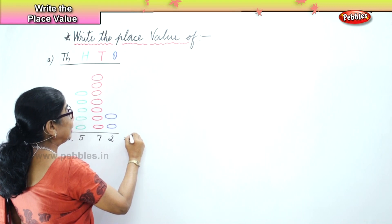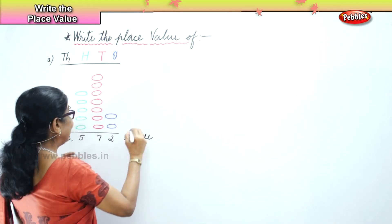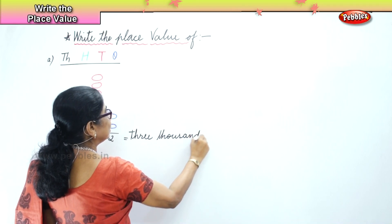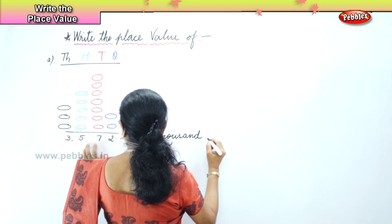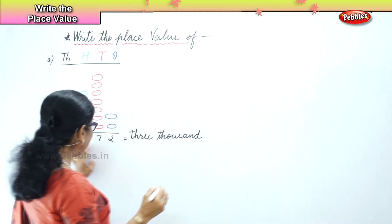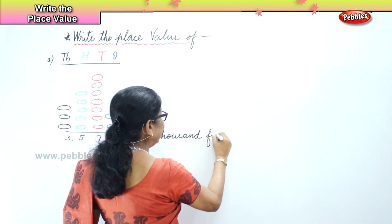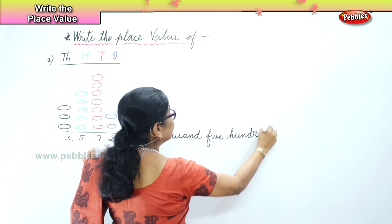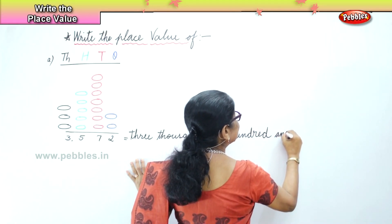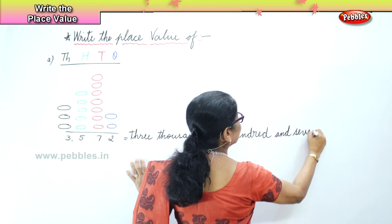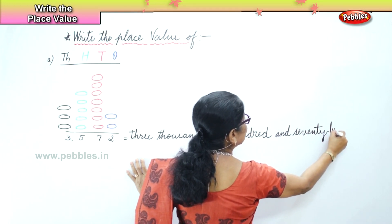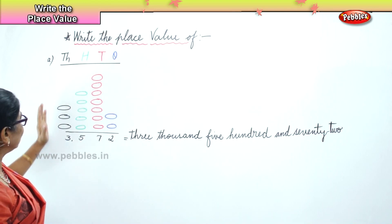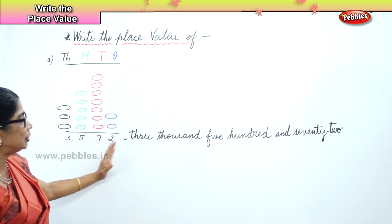So how will you write? Three thousand, five hundred, and seventy-two. So when you look at that: three thousand, five hundred, seventy-two.